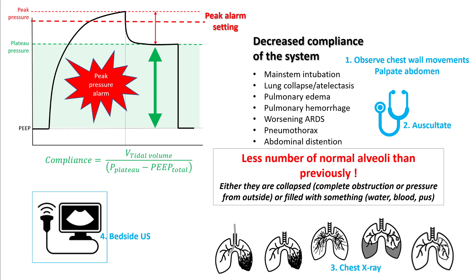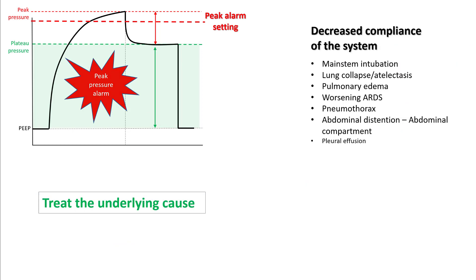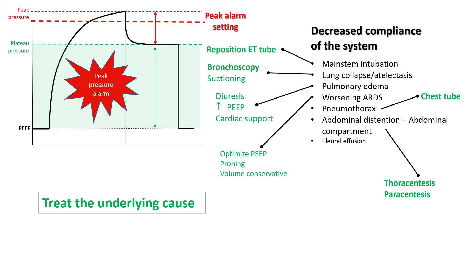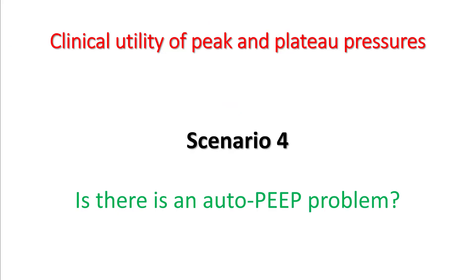Always order a chest X-ray and use bedside ultrasound to identify the underlying problem. The key to worsening compliance is treating the underlying cause: reposition the ET tube or perform bronchoscopy for lung collapse; increase PEEP, diurese, and provide cardiac support for edema; use proning and optimize PEEP for worsening ARDS; place a chest tube for pneumothorax; perform paracentesis for abdominal compartment syndrome; and perform thoracentesis for effusions.